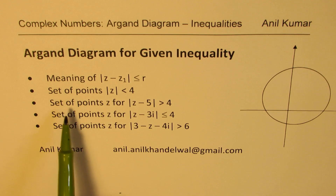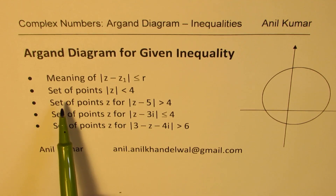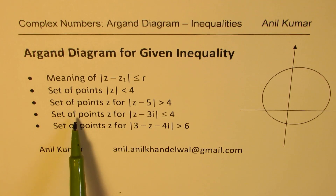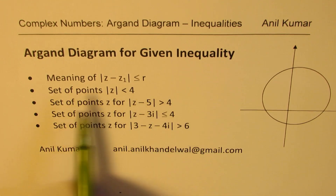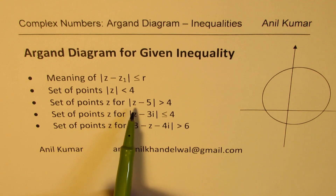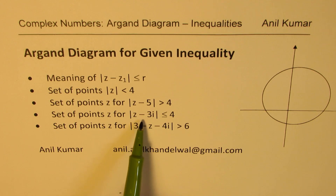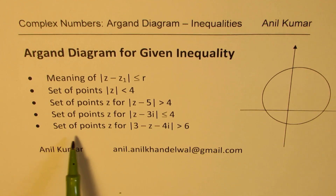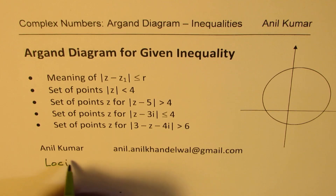We're going to work on the meaning of the absolute value of z minus z1 less than or equal to r. After understanding this concept, we are going to take four examples. The first example will be to graph the set of points where absolute value of z is less than 4. Then set of points for z minus 5 greater than 4. Then absolute value of z minus 3i less than or equal to 4. And then absolute value of 3 minus z minus 4i greater than 6. We say loci as another term, which means set of points.